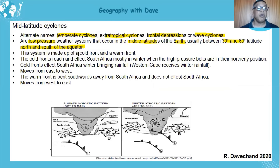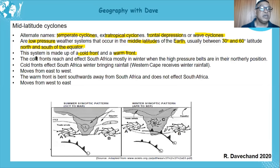Two distinct characteristics: it's made up of a cold front and a warm front. Don't mix it up — the eye is a feature of the tropical cyclone. With the mid-latitude cyclone, we have a cold front and a warm front. Cold fronts reach and affect South Africa mostly in winter.